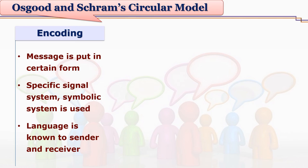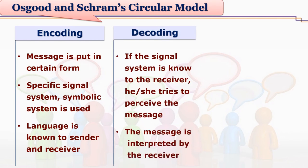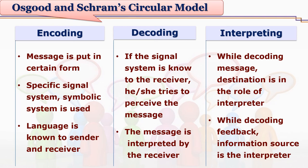Whenever you receive a message, you try to understand which system of signs and symbols is used by the sender. You then try to decode it by using your own understanding of those same signs and symbols. When you open and analyze this message, decoding gets converted into interpretation. So first you decode the message, and then you come out with your own understanding — your own interpretation of the message. On the basis of your interpretation, you create a new message as feedback.